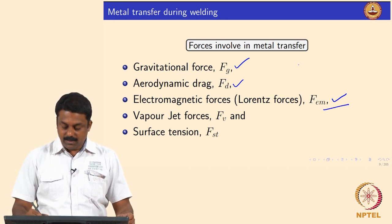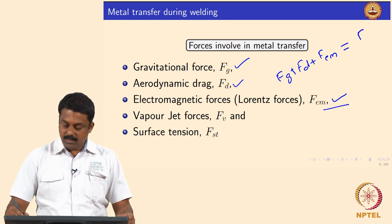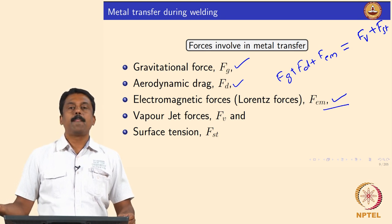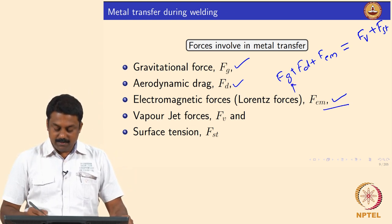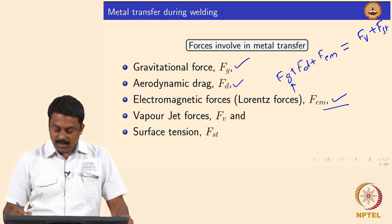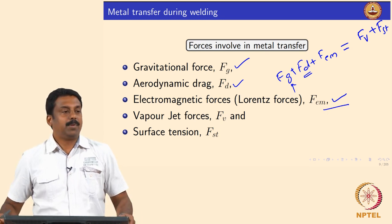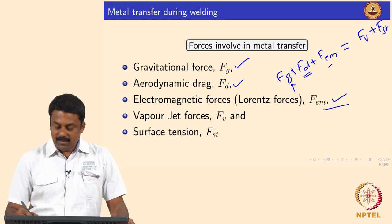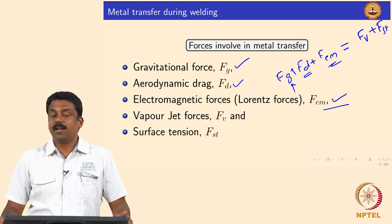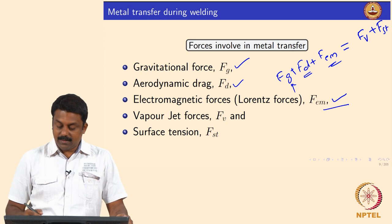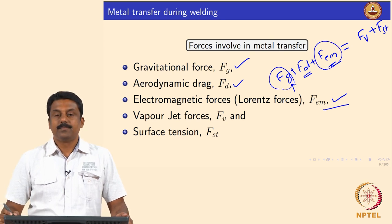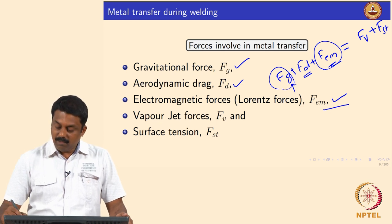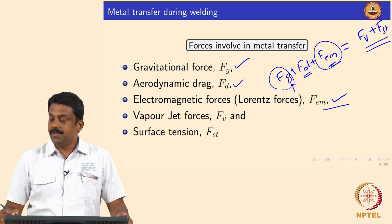These three forces — Fd plus Fem and Fg — if equal to the vapor jet plus surface tension, it is the equilibrium situation. For the droplet to be detached, gravity must be higher, or the Lorentz force — which is a function of current — must overcome the resisting forces of vapor jet and surface tension.